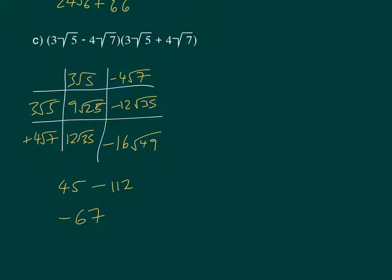Now, the reason why this type is important for rationalizing the denominator is that you do not end up with any surds in your final expansion. Once it's been expanded, there are no surds. And we'll look at how that works when we're rationalizing the denominator in the next video.